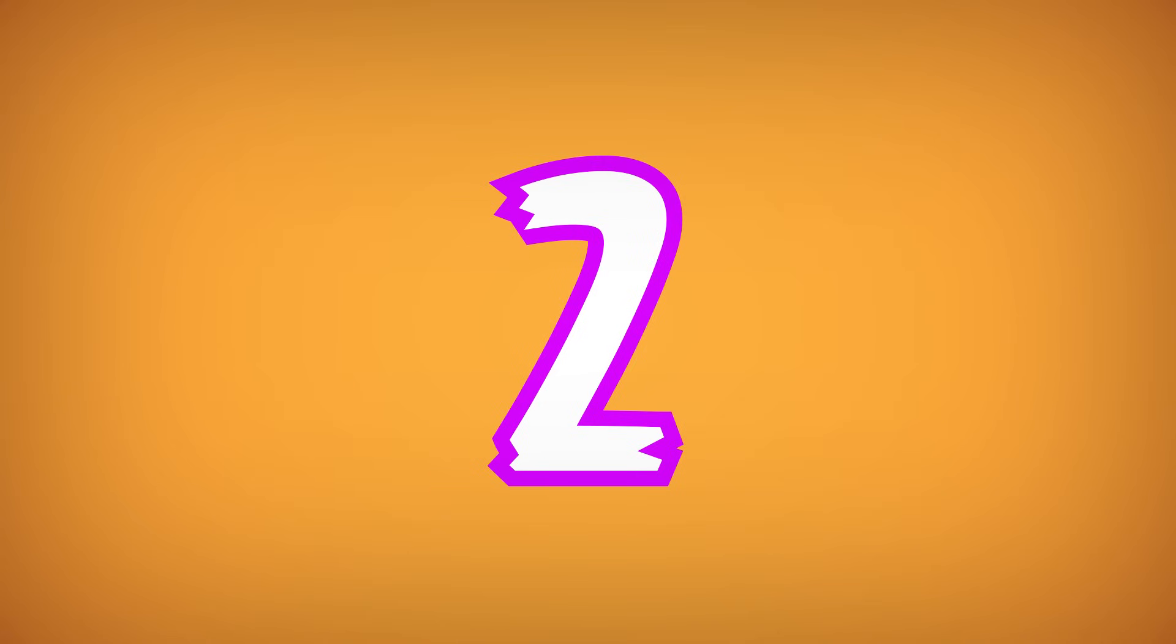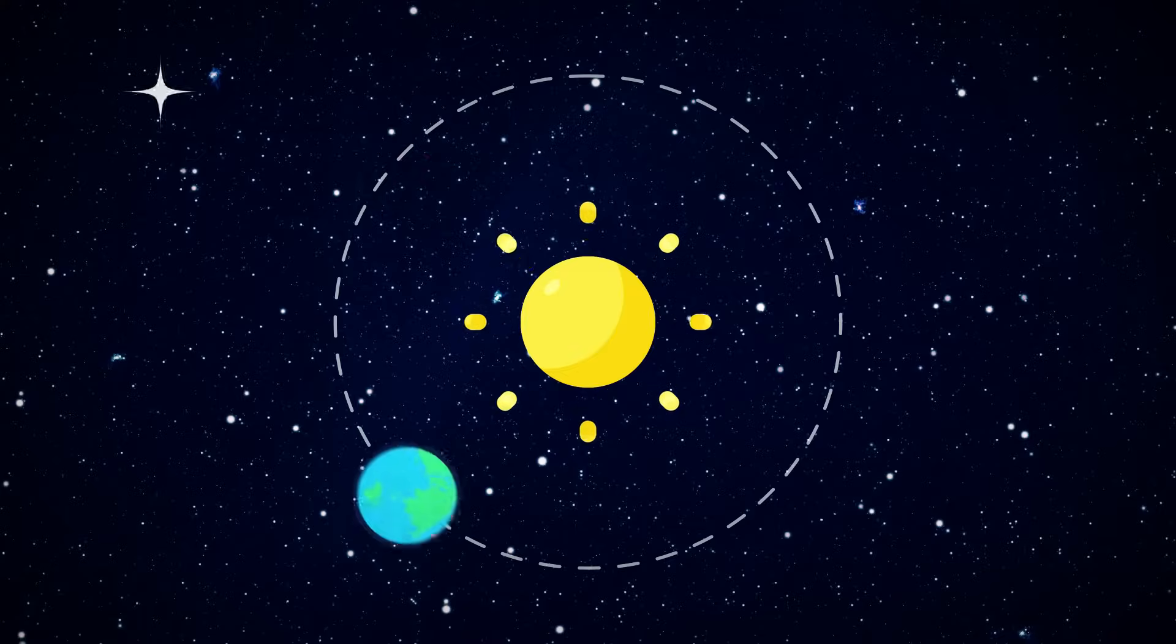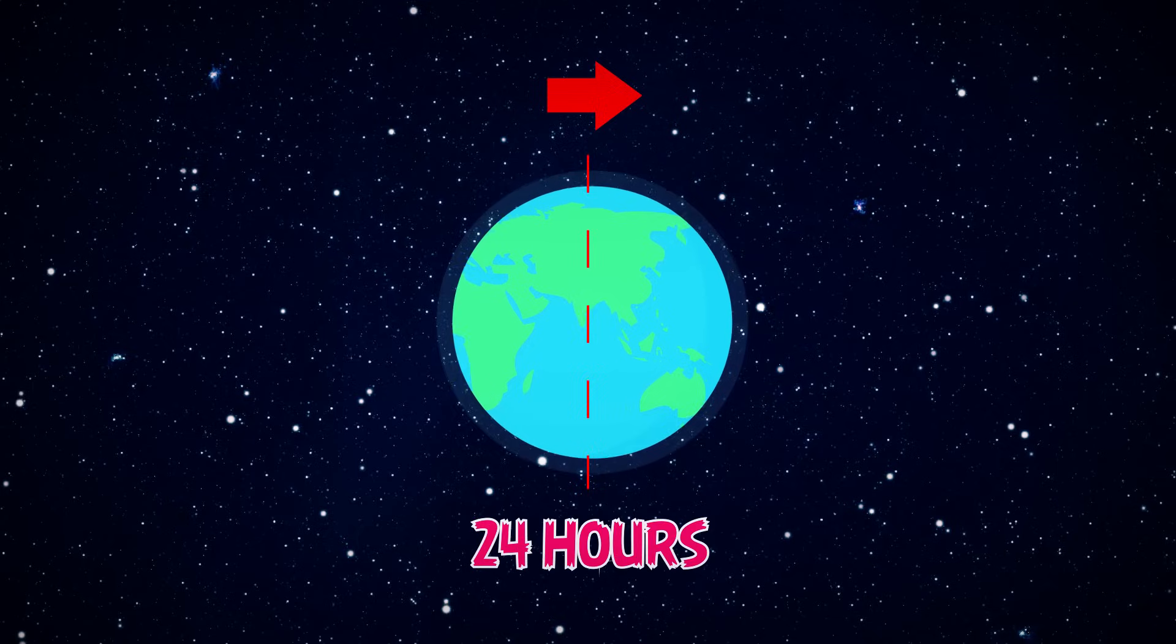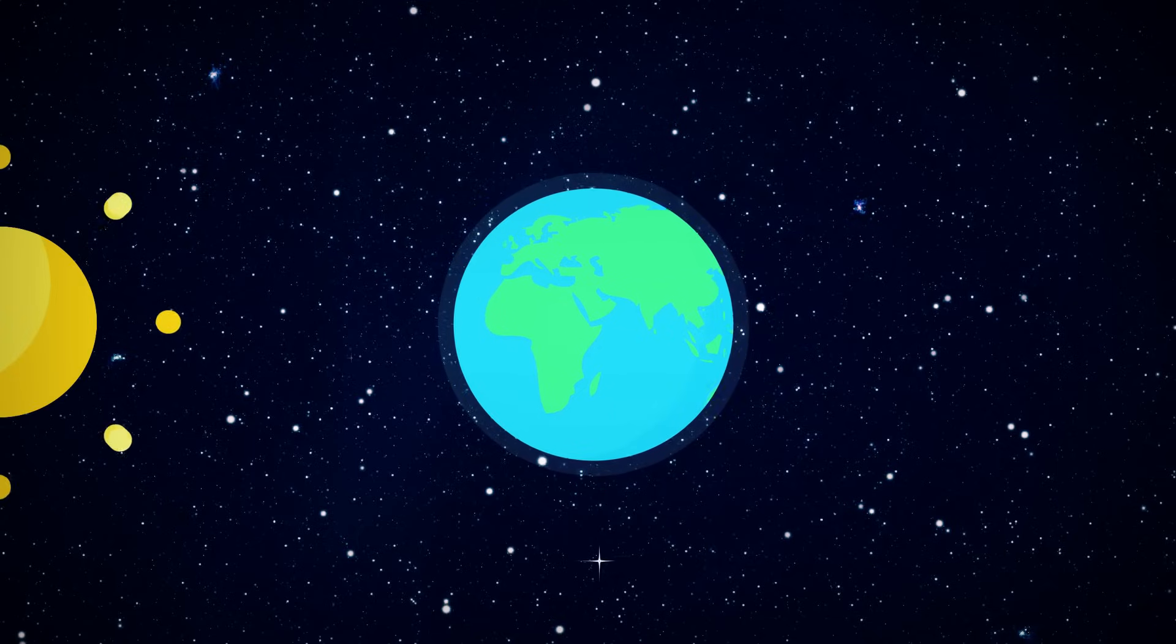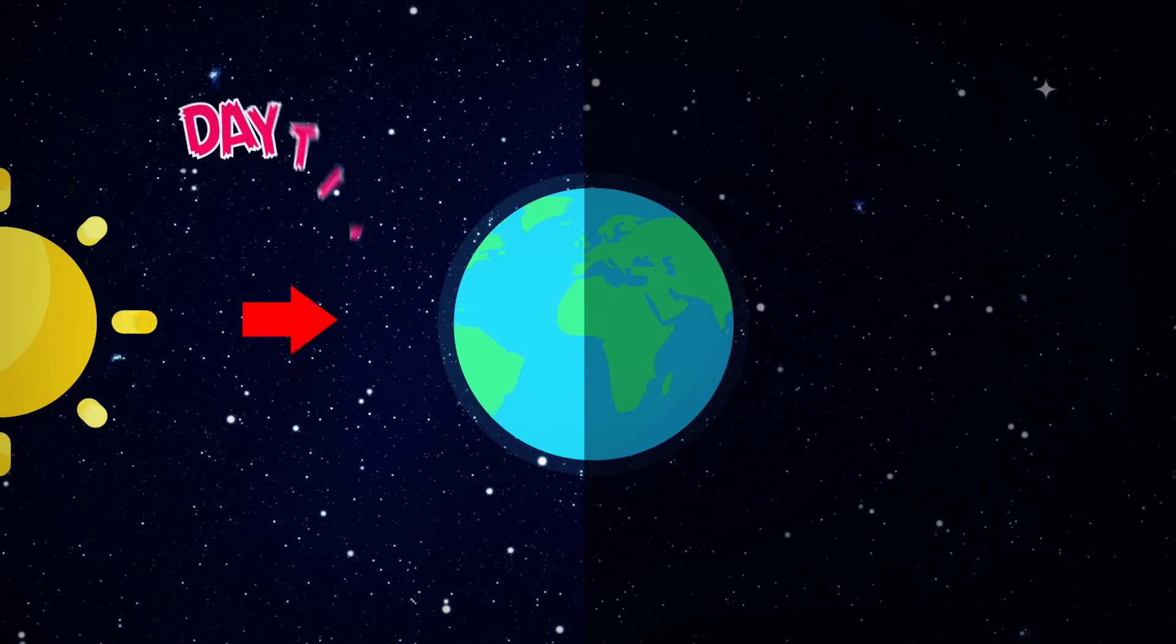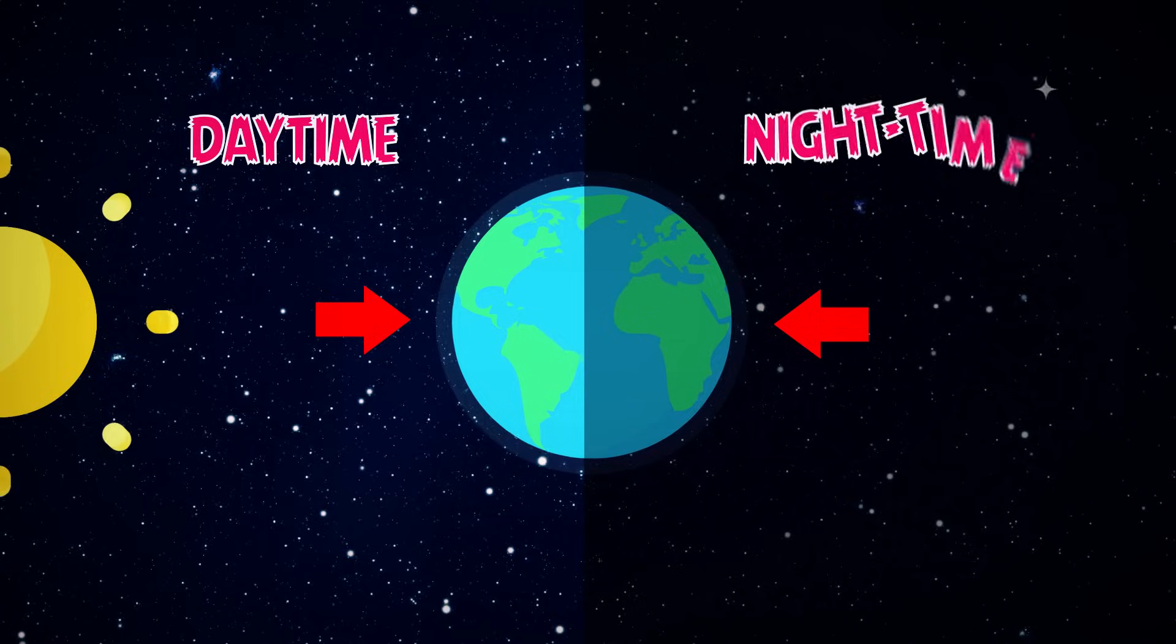Number 2. As the Earth orbits around the Sun, it turns on its axis, rotating right round in 24 hours. The side of the Earth that faces the Sun has daytime, and the side of the Earth that is turned away from the Sun has nighttime.